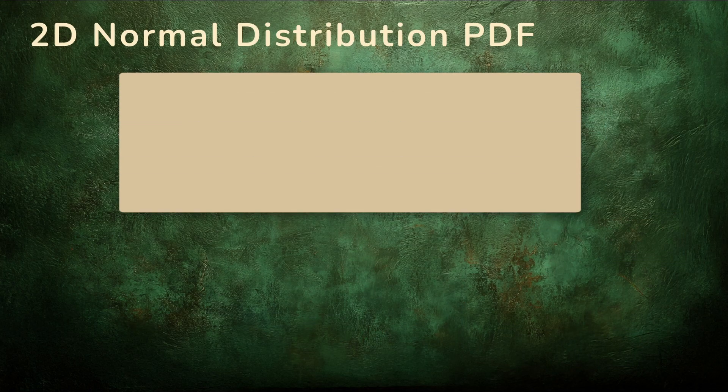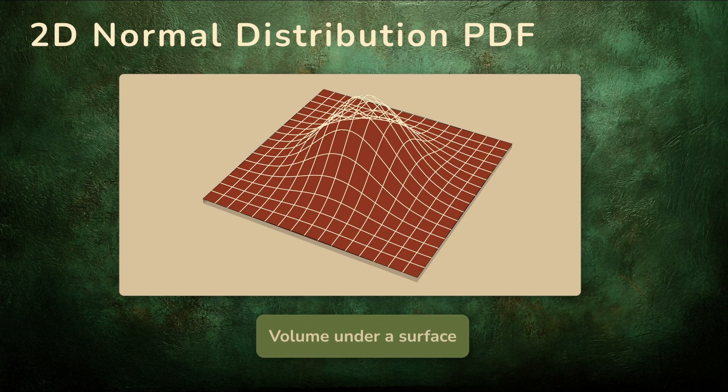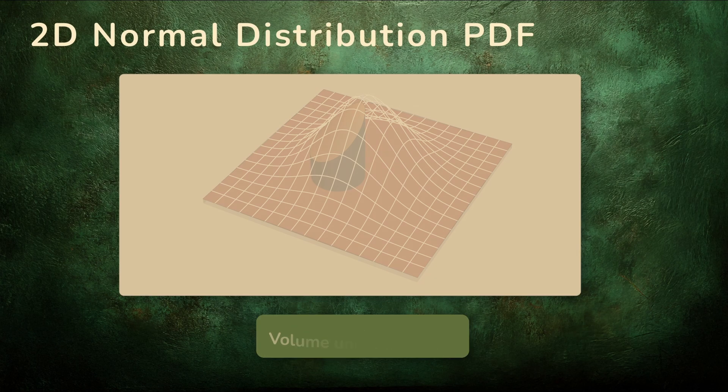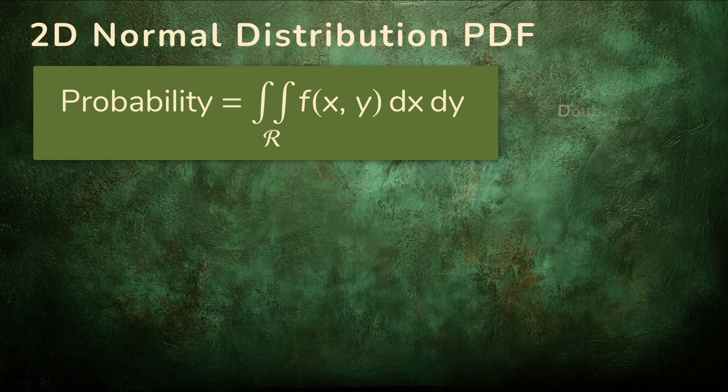In two dimensions, the same idea applies, but we have to update our language. Instead of a curve, the PDF is now a surface. And instead of area under a curve, we need the volume under a surface. To find the probability of data appearing inside a certain region of the plane, we compute a double integral of the PDF over that region.